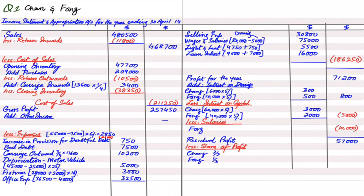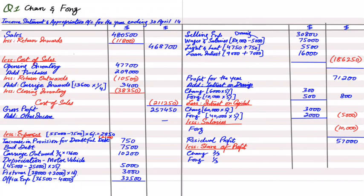The total profit of approximately 71,200 plus interest on drawings of 800 gives 72,000. After deducting the appropriation items of around 15,000, the residual profit is split: two-thirds to Chan and one-third to Fong. The total must always be fully appropriated — the residual should be zero after distribution.